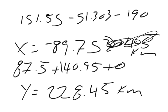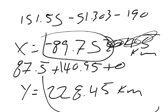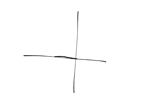So the y resultant is 228.45 kilometers, and it's both in kilometers. So negative 89.75, 228.45. What does that mean? So if I go over negative 89.75, I go up to 228.45. That gives me this triangle, so I can take this x value squared, add it to this y value squared, find the square root, and that's my distance.